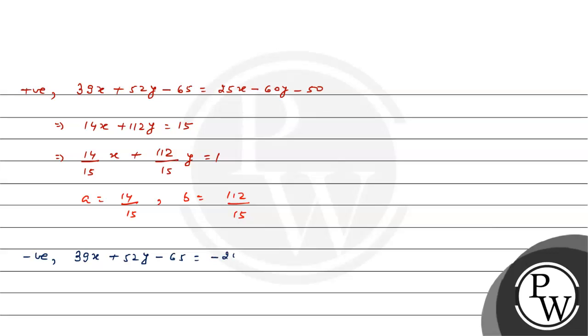This gives 64x minus 8y equal 115. Dividing by 115: (64 by 115)x minus (8 by 115)y equal 1.